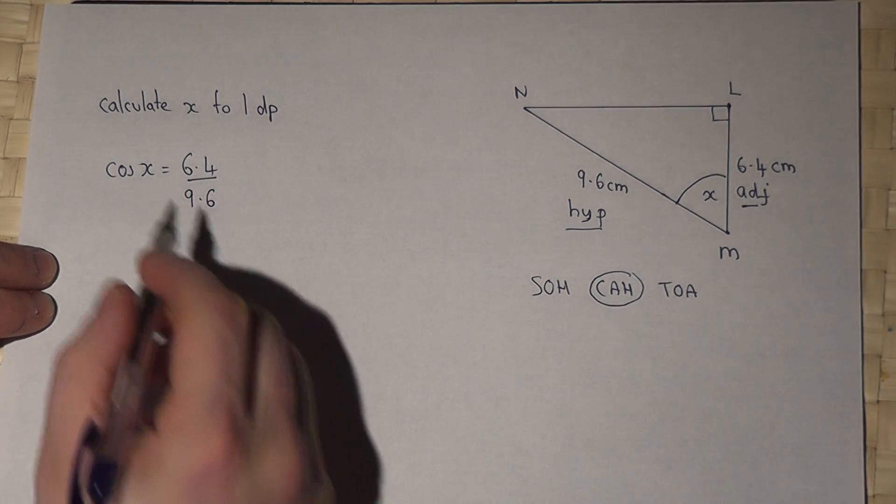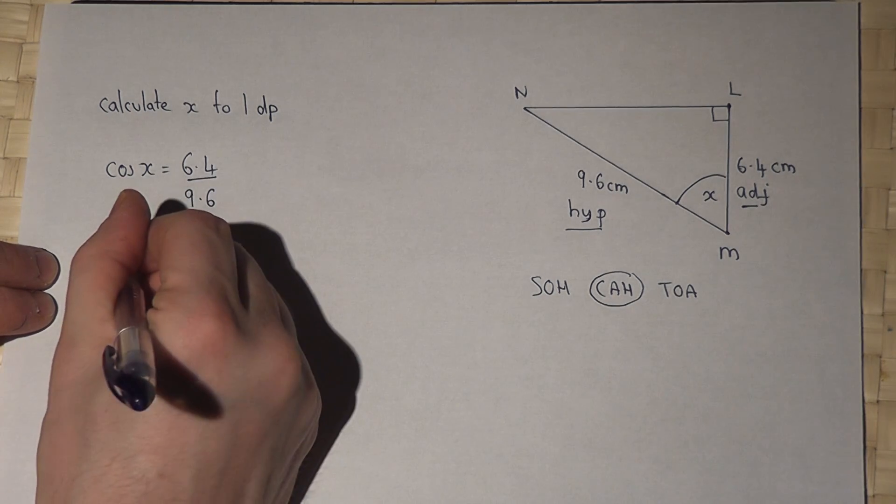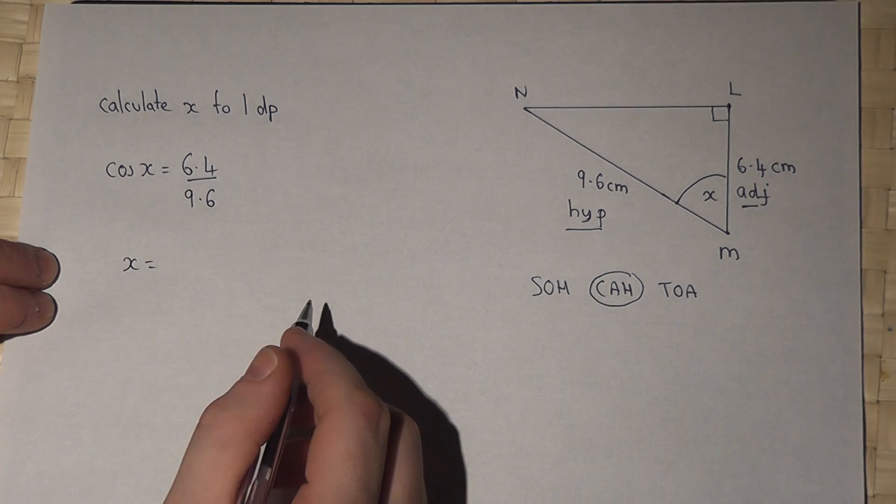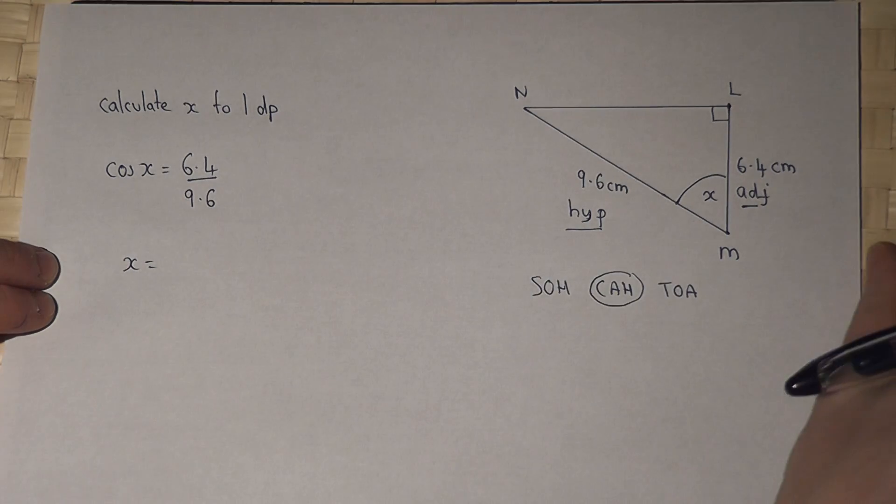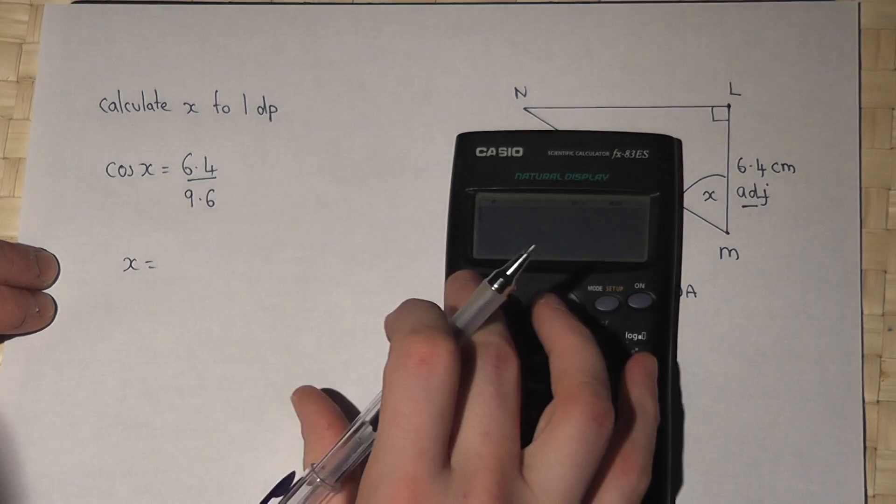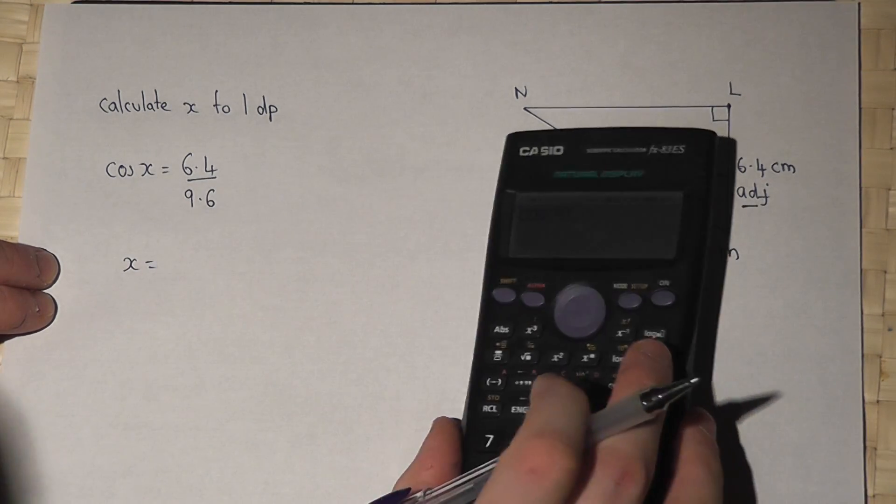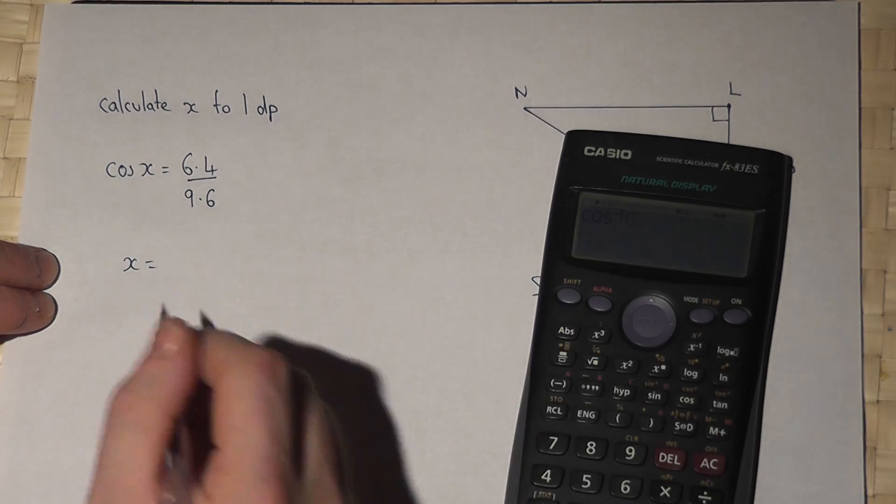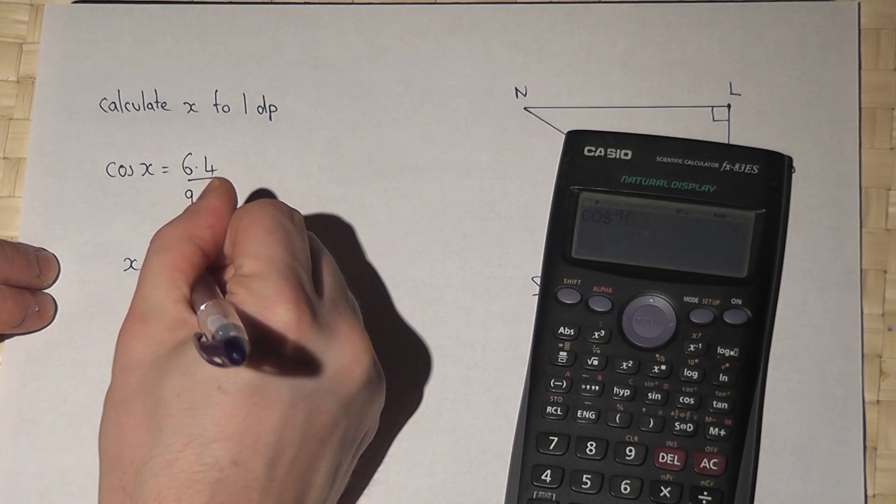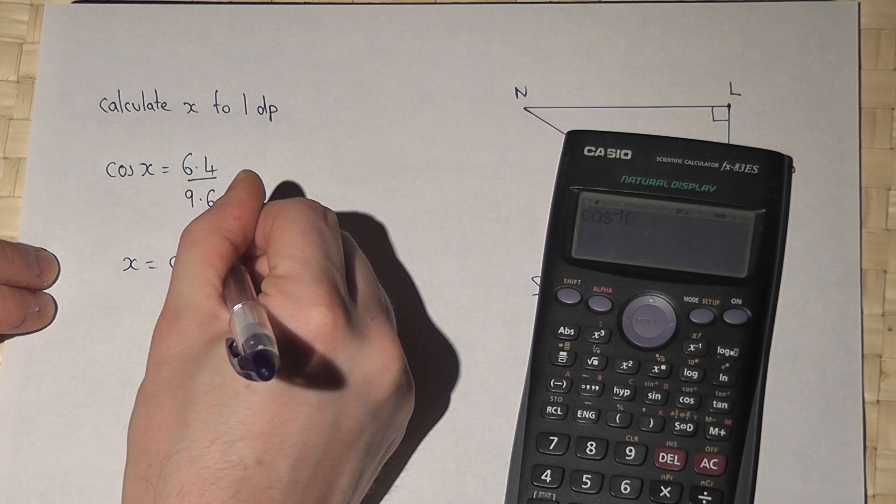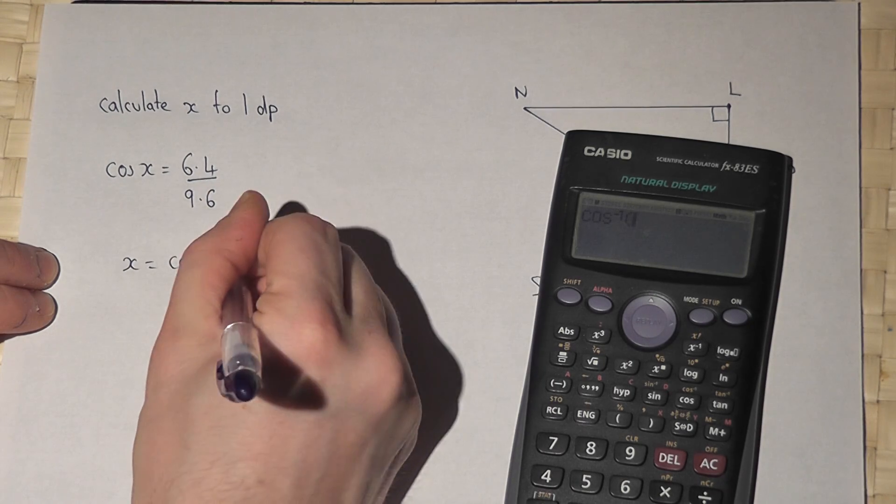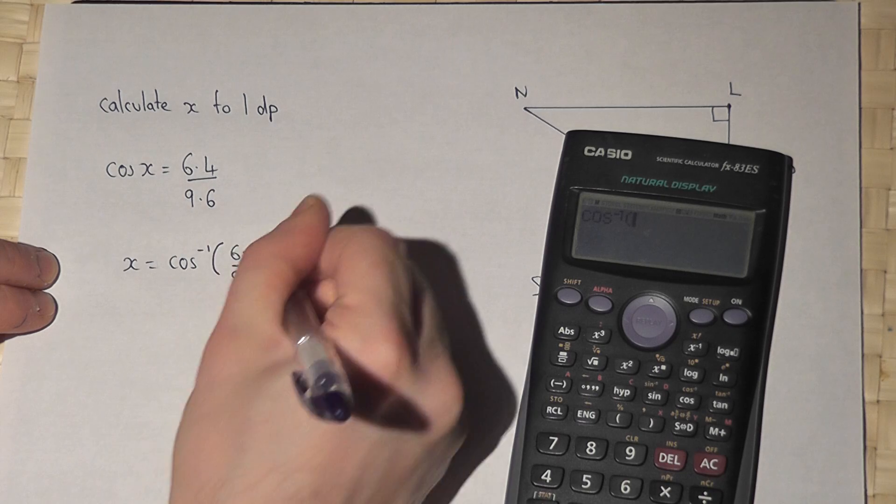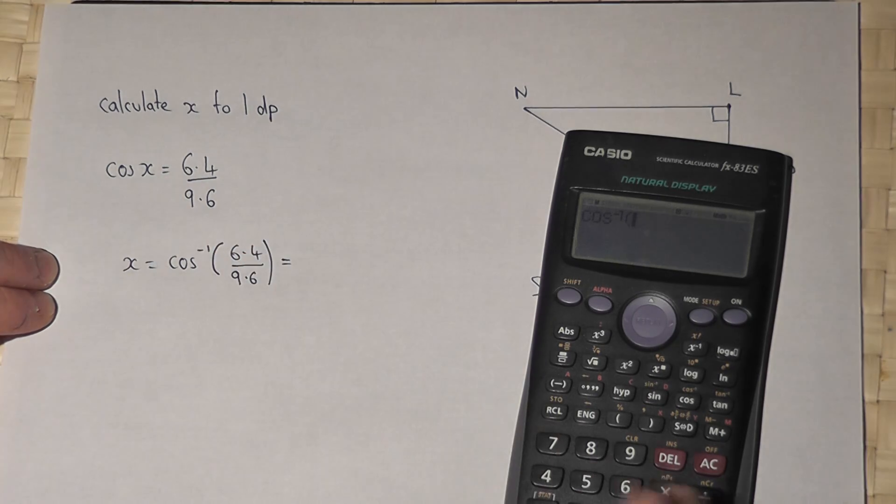Now then I want to find out what X is, so to find X I must use the inverse cos button which can be found by pressing shift cos and it comes up as cos minus 1. So X equals cos to the power of minus 1 of 6.4 over 9.6. That's the inverse cos function.